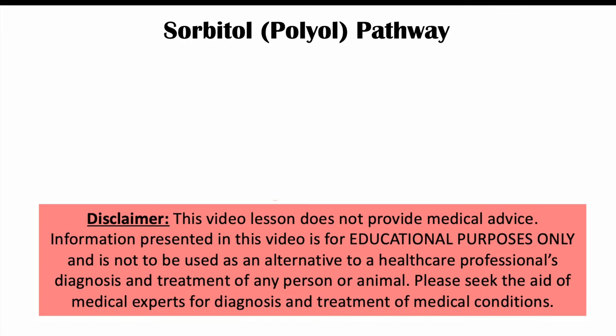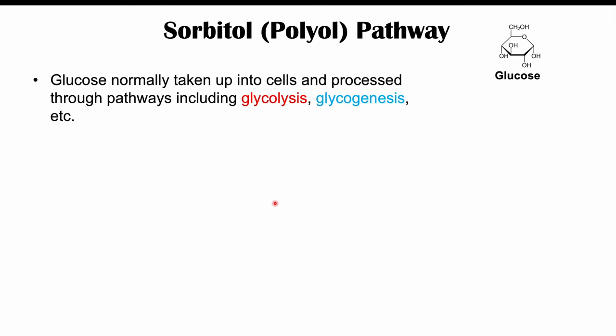In this lesson, we're talking about the sorbitol or polyol pathway — why we need it and why it's important in disease. The sorbitol pathway is a particular metabolic pathway used in specific places in the body. Generally, glucose is normally processed through glycolysis or glycogenesis, but the sorbitol pathway is an alternative route for glucose.